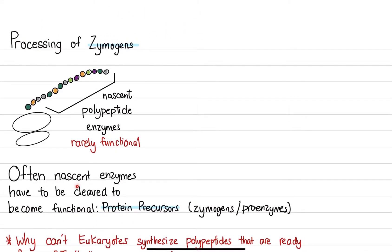So often nascent enzymes have to be cleaved to become functional. These are called protein precursors. And that's because there are a couple of reasons why we can have protein precursors. And these are called zymogens or you can also call them proenzymes.